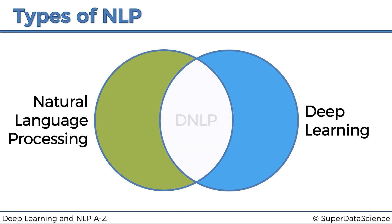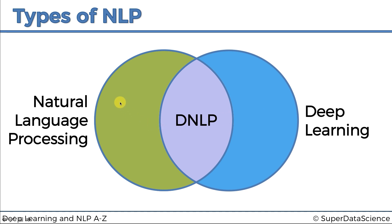In the overlap, we have deep NLP — models which have to do with natural language processing but which are also deep learning or neural network models. That's the part we're going to be aiming for. But it's also very good to have visibility of all three, because in this course we will talk about models that fall just in NLP, and also models in deep NLP, so we can compare and see how the world has changed over time and why these models are often better.